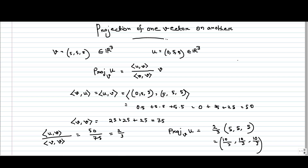Geometrically, what we are doing is starting with two vectors. Suppose this is my V and this is my U. I am taking the projection of U onto V — basically calculating a vector with a certain magnitude in the direction of V. This is the geometric interpretation.